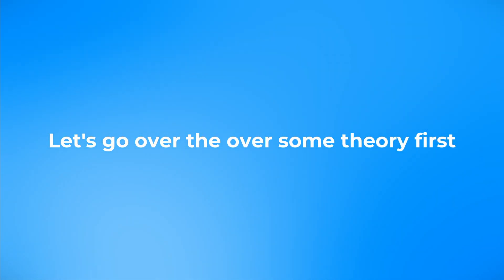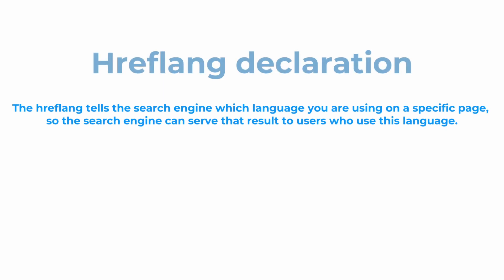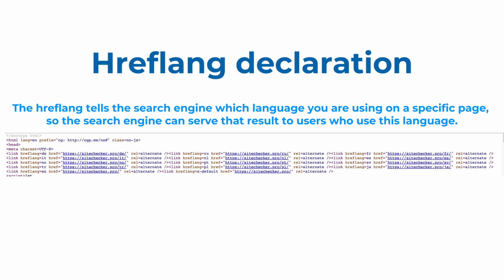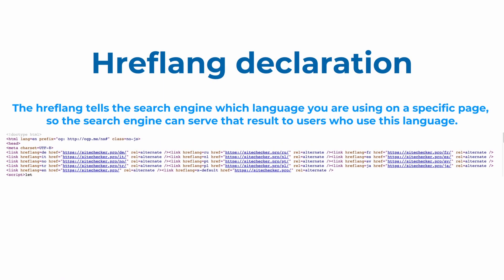First, let's cover the theory of hreflang. The hreflang tells the search engine which language you are using on a specific page, so the search engine can serve that result to users in a specific location or people who use this language.